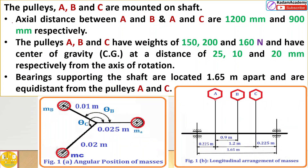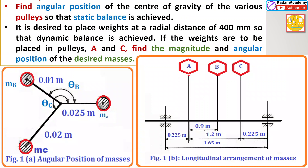First, we note what is given: the axial distance between A and B, and A and C, is 100 millimeters and 1.2 meters respectively. The pulleys A, B, C have weights given in Newtons. Distances of 25, 10, and 20 millimeters are converted to meters: 0.025, 0.01, and 0.02 meters. For the second condition, we find the angular position of the center of gravity of various masses — theta_c and theta_b — assuming theta_a is zero.